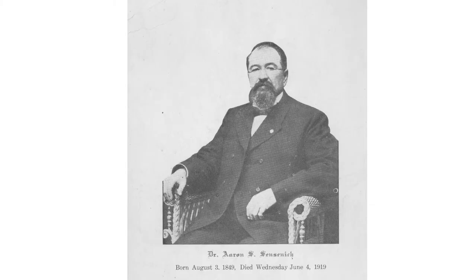Roscoe L. Sensenage was born on November 2, 1882 to Martha and Aaron Stouffer Sensenage of Wakarusa, Indiana. Aaron was a well-known and respected doctor in the city for many years. After attending high school in Napanee, Indiana, Roscoe started college at the University of Chicago in 1900, where he took their pre-medical courses. Once he had finished his lessons, he transferred to Rush Medical College, graduating in 1905 with a degree of Doctor of Medicine. He served his internship at the Presbyterian Hospital of Chicago, following which he was assistant to the prominent Dr. Nicholas Sen until the year 1907.